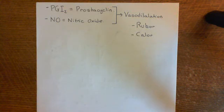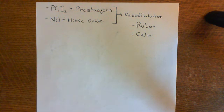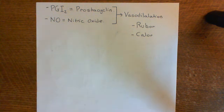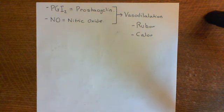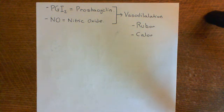Welcome back to this next video in which we are discussing leukocyte extravasation. We were just discussing type 1 activation of endothelial cells, which occurs when ligands such as histamine interact with endothelial cells by binding to receptors on their surface, which are coupled to GQ G-proteins.